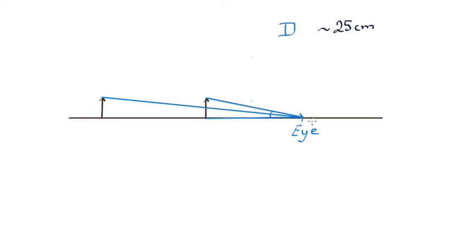If the ant is beyond 25 centimeters, I can see it clearly but it subtends a small angle and I can't see its parts. So people came up with an ingenious trick: pick up a convex lens — a converging lens, also known as a magnifying glass, also known as a simple microscope — and place it between the eye and the ant. Let me draw the diagram for that.